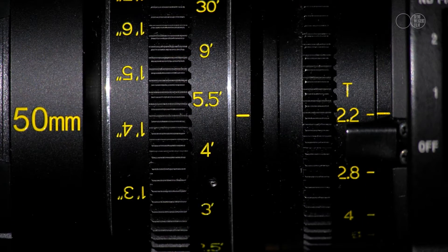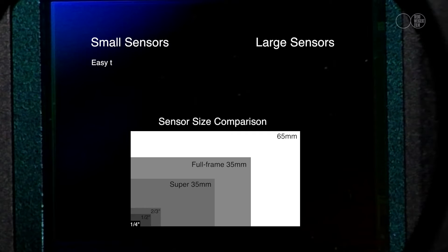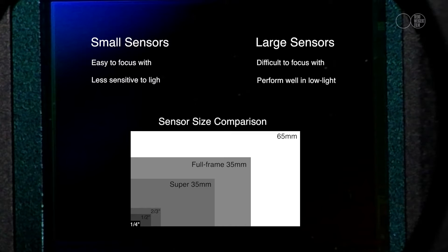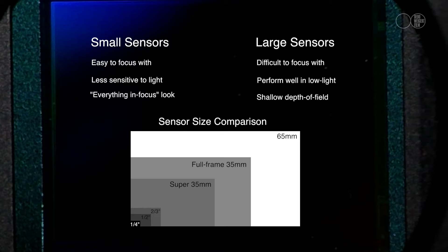Small sensors are easier to focus with than a large sensor, while large sensors are more difficult to focus. Big sensors perform better in low light, whereas small sensors are less sensitive to light. Big sensors produce a shallow depth of field effect, whereas small sensors produce the everything-in-focus look.